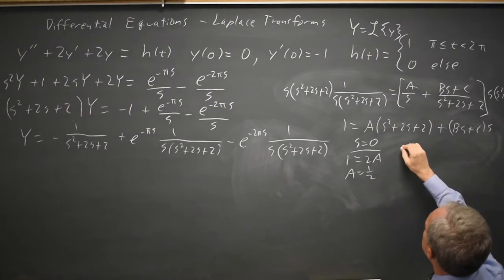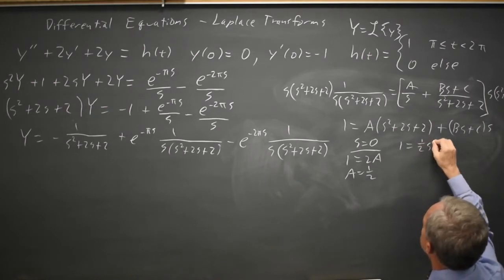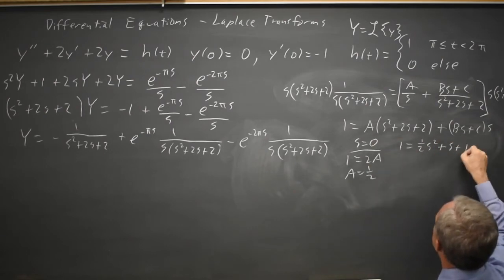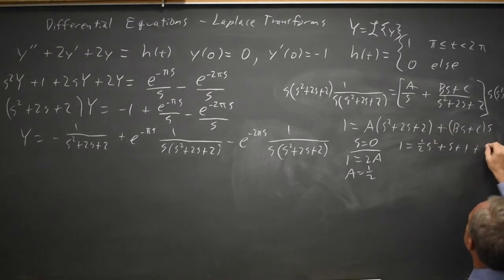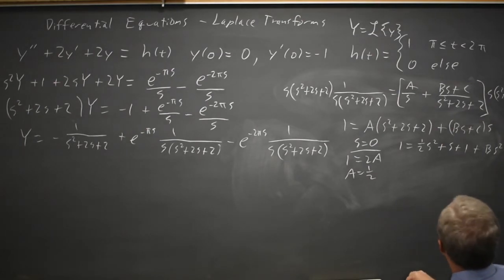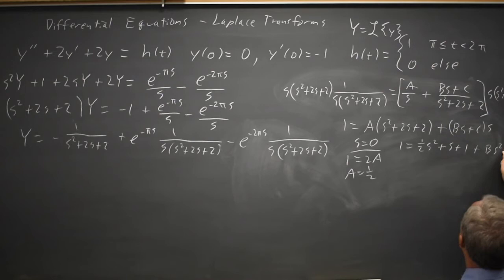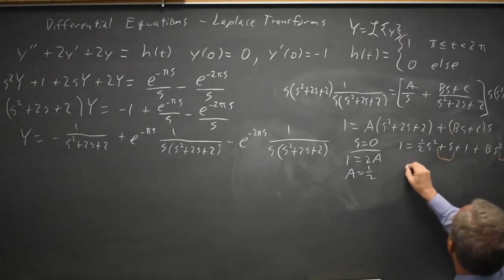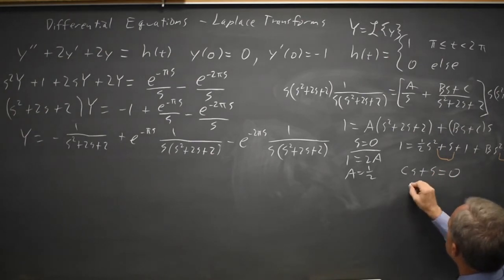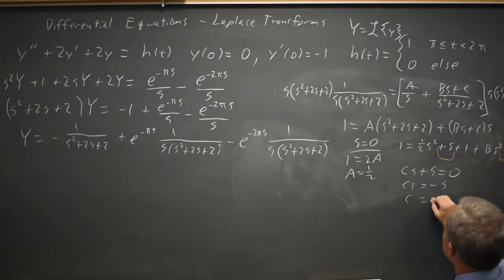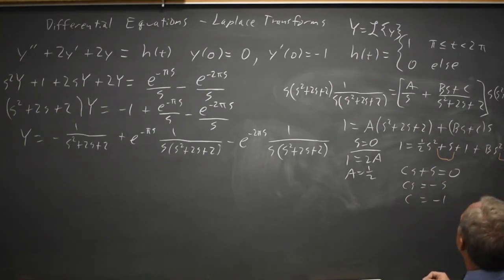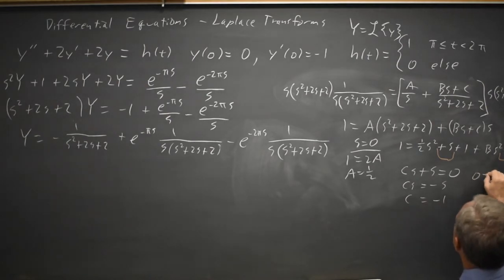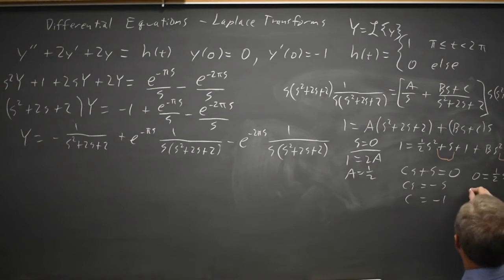Distributing: 1 equals (1/2)(s squared plus 2s plus 2) plus Bs squared plus Cs. Matching the linear expression on the right — Cs plus s — to the linear expression on the left, which is 0, gives Cs equals negative s, so C equals negative 1. Matching the quadratic expressions: 0 equals 1/2 plus B, so subtracting 1/2 gives B equals negative 1/2.